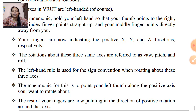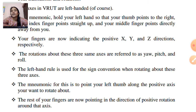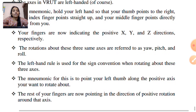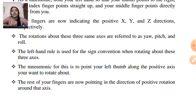The rotation about these 3 axes is referred to as Yaw, Pitch, and Roll. The left-hand rule is used for the sign convention when rotating about these 3 axes. The mnemonic is to point your left thumb along the positive axis you want to rotate about.